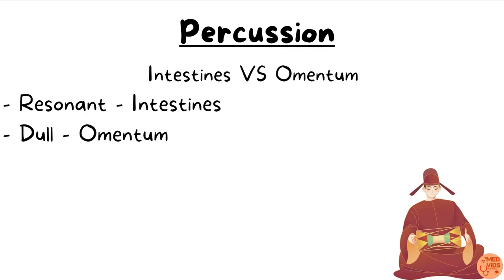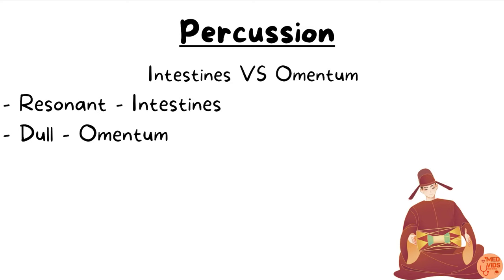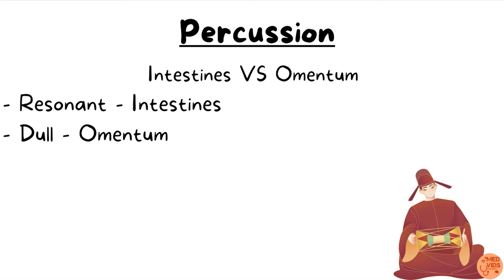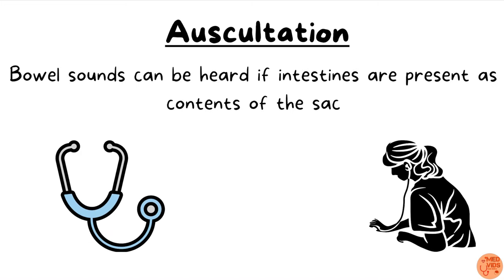Percussion over the inguinal swelling gives a clue about the content of the hernia. A resonant note on percussion suggests the content is intestine, whereas a dull note suggests fat or omentum. Auscultation: if the content of the hernia is intestine, bowel sounds can be heard in certain cases by placing the stethoscope on the hernial swelling.